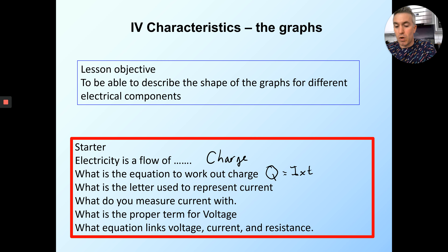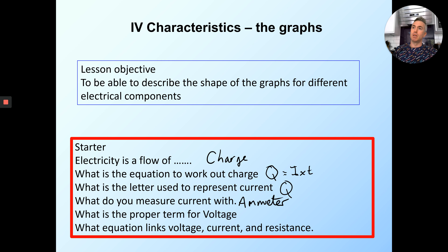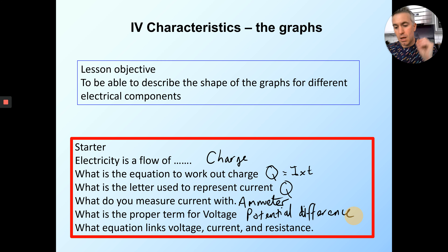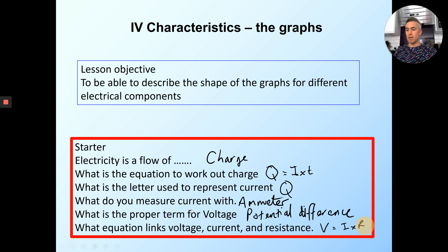What is the letter used to represent charge? We've already shown you that in the previous one — Q. What do you measure current with? You measure current with a device called an ammeter. What is the proper term for voltage? People often use the word voltage incorrectly; what they're actually talking about is potential difference. And the last one: what equation links current, voltage, and resistance? The equation is V is equal to I multiplied by R.